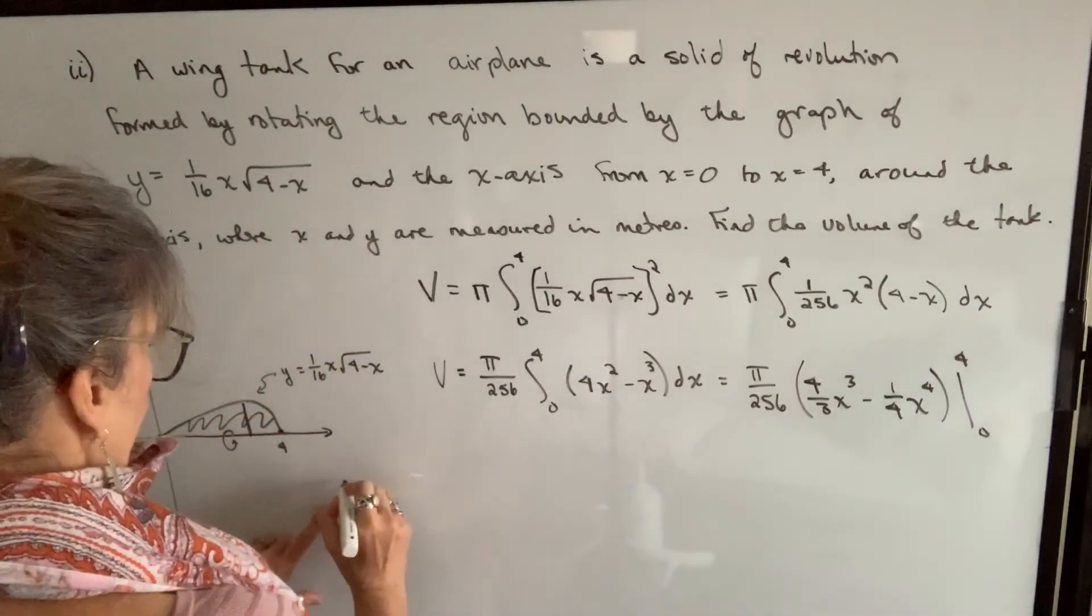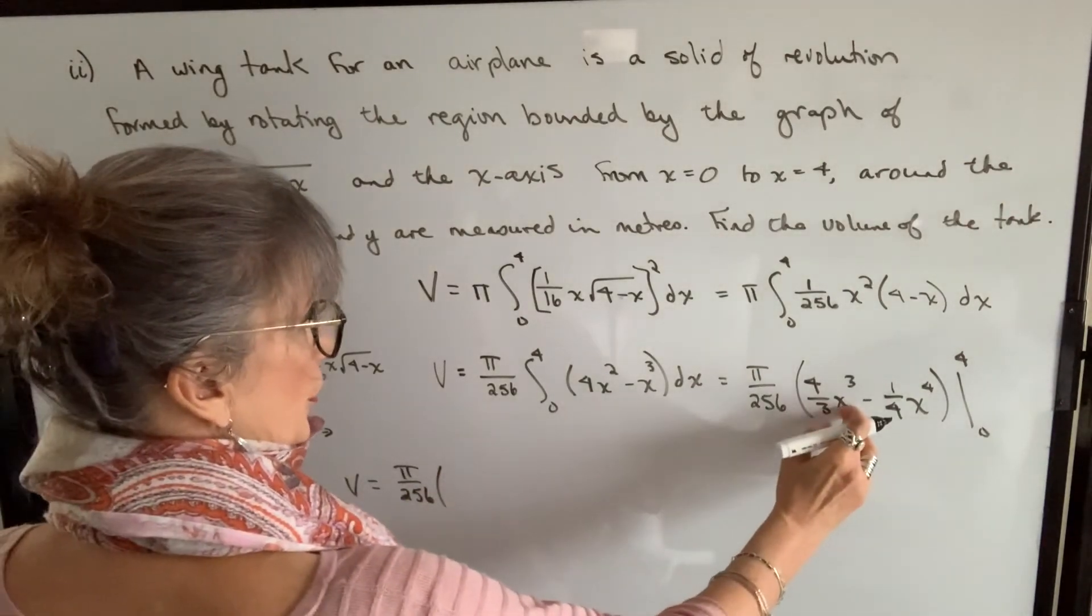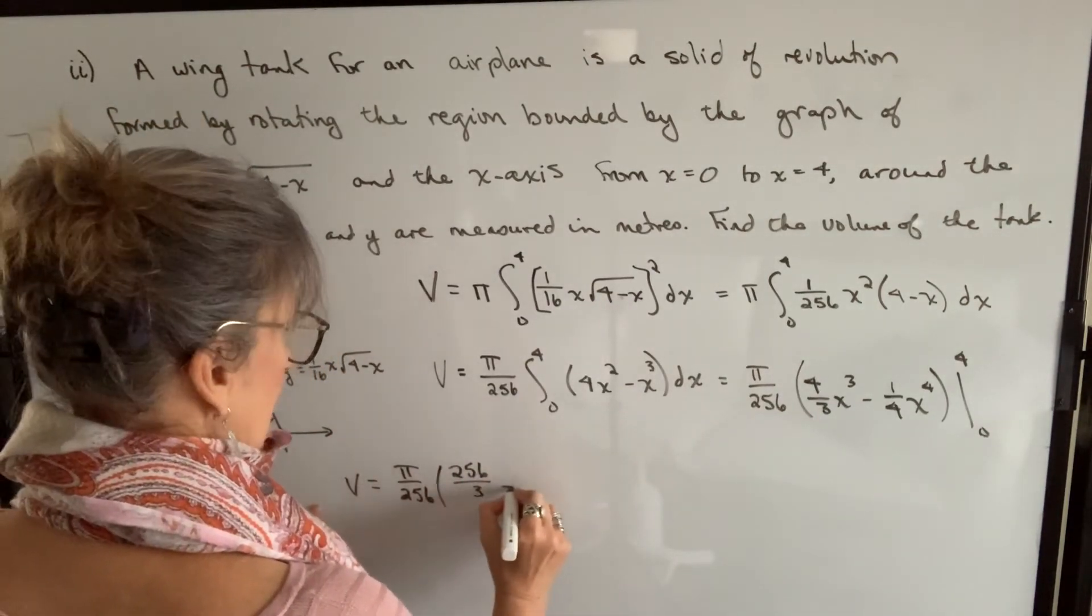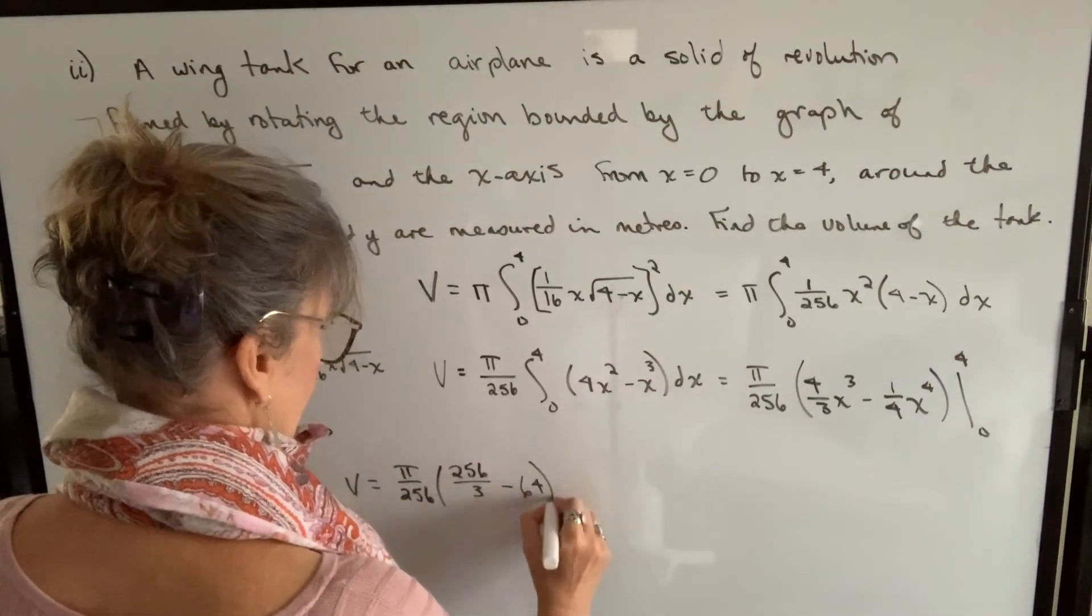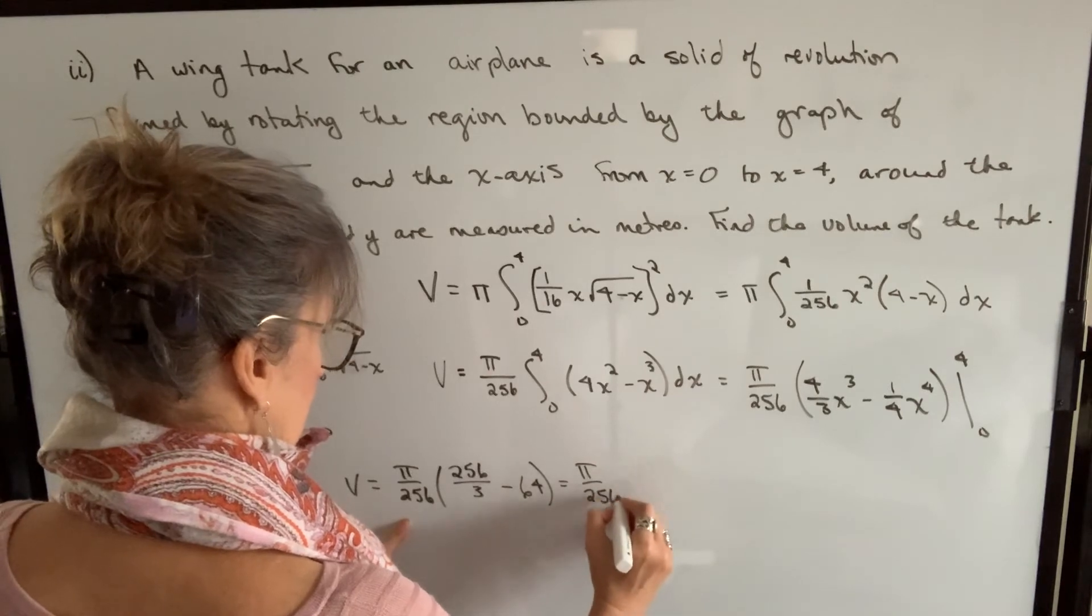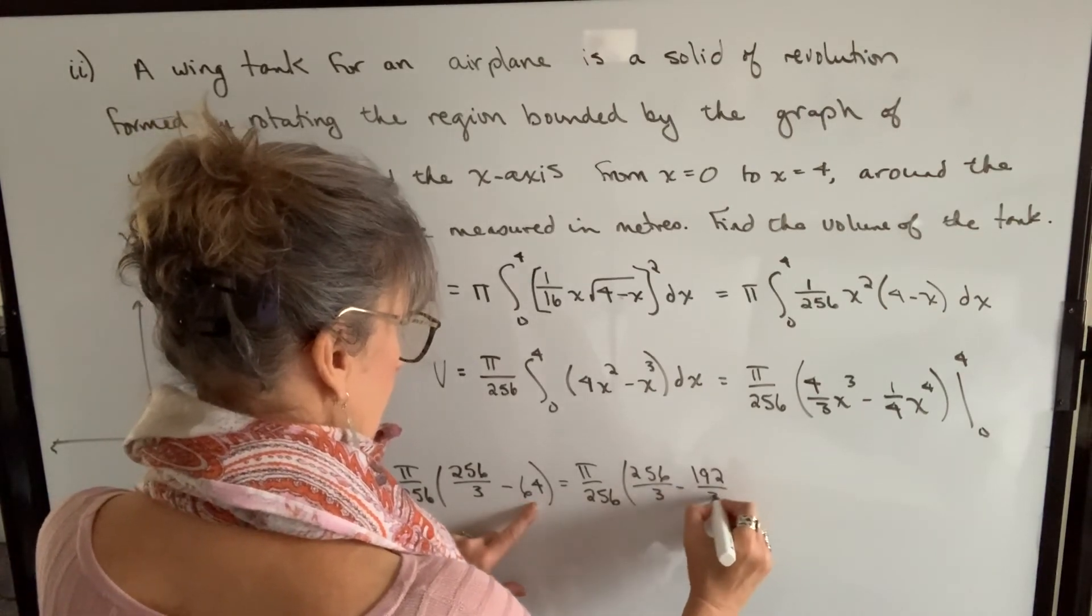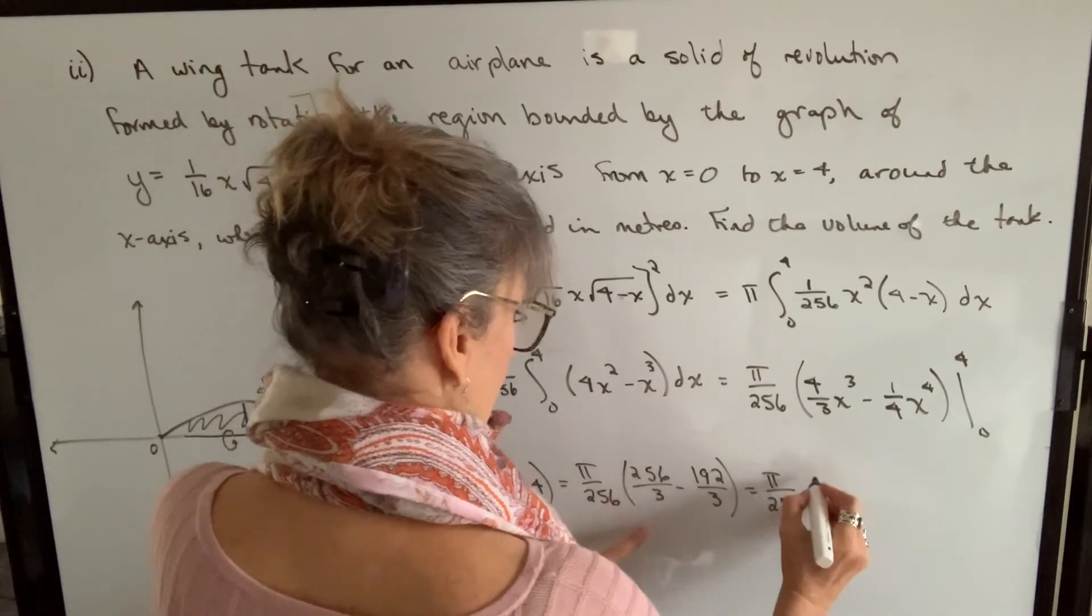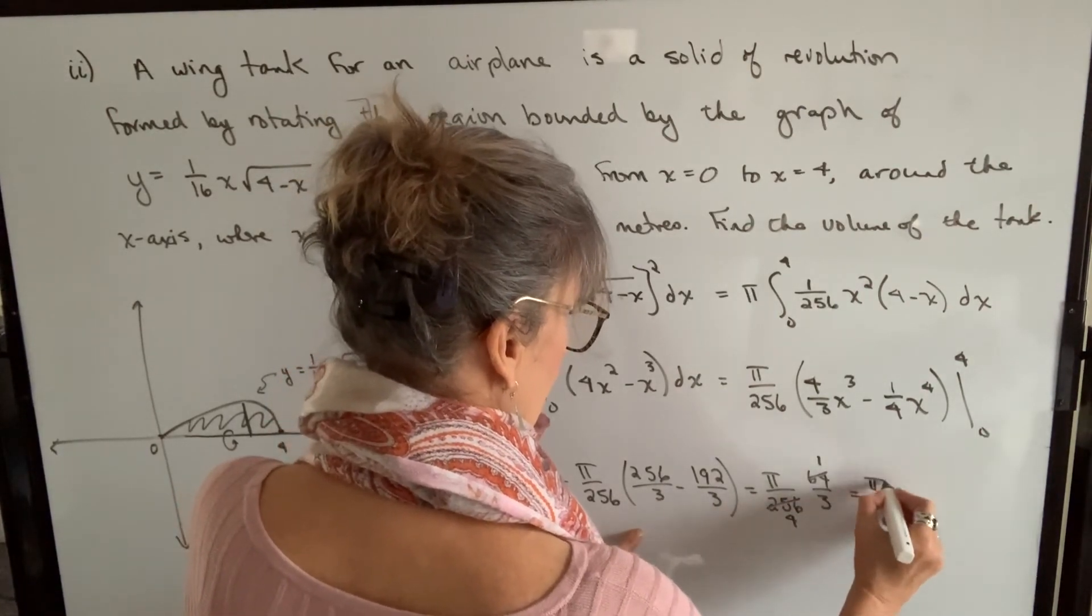And now we evaluate it. So the volume will be equal to pi over 256. When I put a 4 in for x, 4 cubed is 64 times 4 is 256 over 3. Minus 4 to the fourth is 256 divided by 4 is 64. Minus, when we put a 0 in, it's just 0. This will equal, we get a common denominator of 3. So this is 192 over 3. And when I subtract, I get 64 over 3. 64 into there 4. So it will be pi over 12.